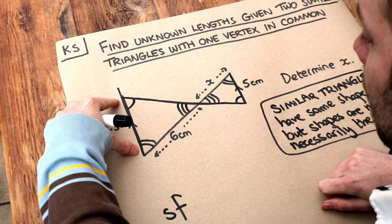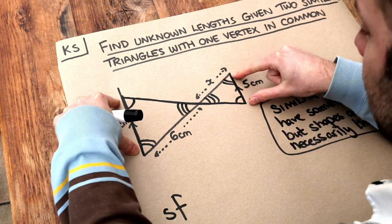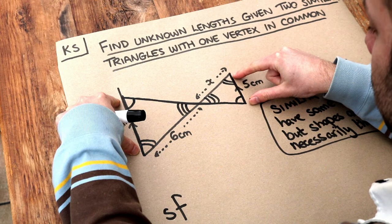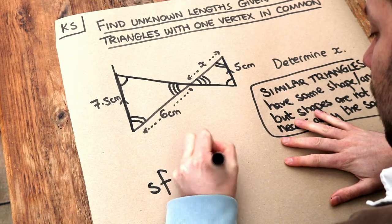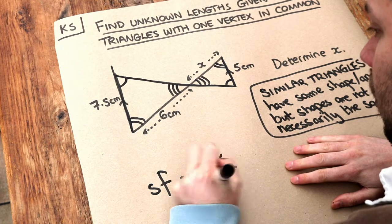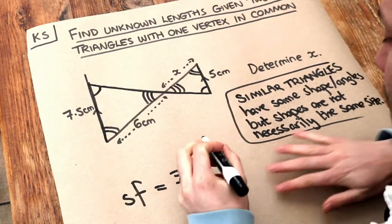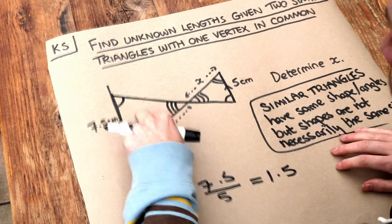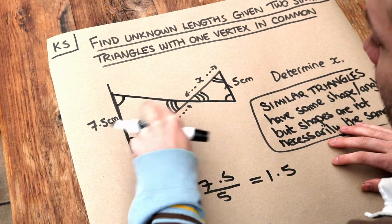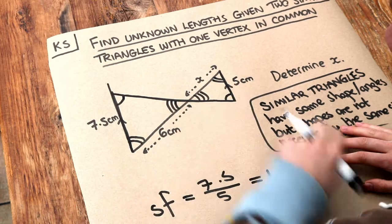So can you see that this length on the left triangle is equivalent to this length on the right triangle? So if we just divide the two, 7.5 divided by 5 or you can divide the other way around, that gives you 1.5. So that tells you that this triangle is 1.5 times bigger in terms of the sides of the length than this triangle.